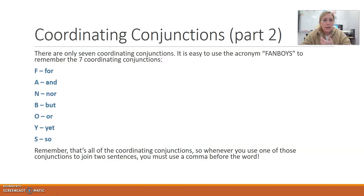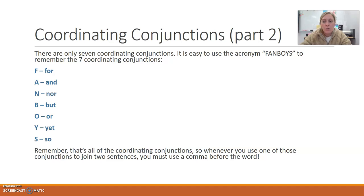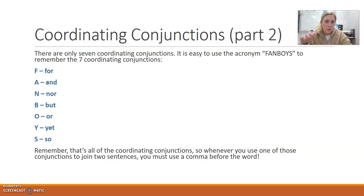There are only seven coordinating conjunctions, and there's an acronym called FANBOYS to help you remember them. F stands for 'for,' A stands for 'and,' N stands for 'nor,' B for 'but,' O for 'or,' Y for 'yet,' and S for 'so.' That's all the coordinating conjunctions. You're going to need to remember what FANBOYS stands for because I'm going to continue to ask you that question as we move through the semester, especially this week.